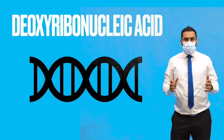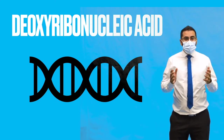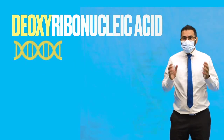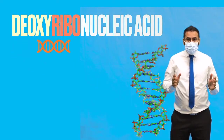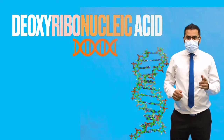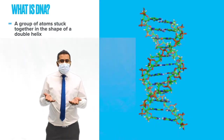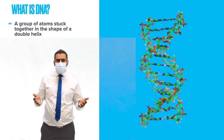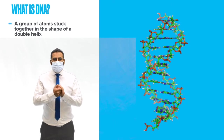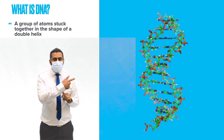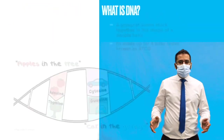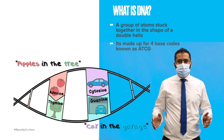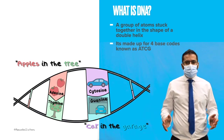So DNA, otherwise known as deoxyribonucleic acid — that's quite a mouthful, so let's just break that down for you: deoxyribonucleic acid. So what is DNA? Well, DNA is a group of atoms stuck together in the shape of a double helix, as you can see on the left hand side of the screen. DNA is made up of four base codes known as A, T, C and G.